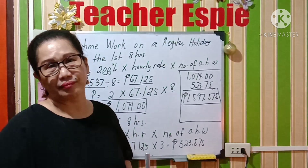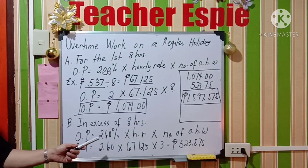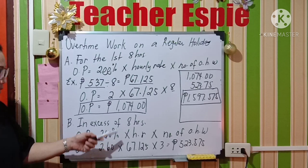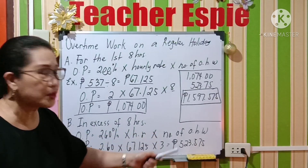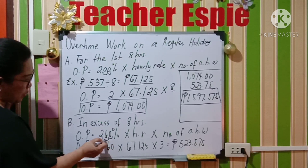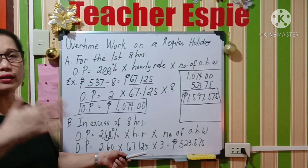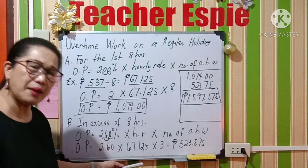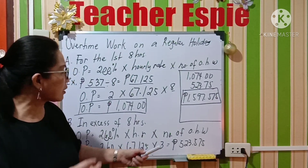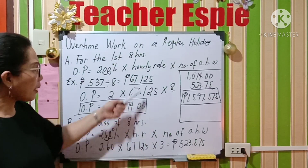For example, after eight hours of working (excluding your lunch break) you render overtime — so how is that computed? In excess of eight hours, the formula is: overtime pay equals 260% times hourly rate times number of overtime hours worked. Converting 260% to decimal by moving two places to the left gives 2.60. So that is 2.60 times 67.125, and for example you worked 3 overtime hours, so multiply by 3.